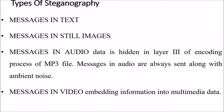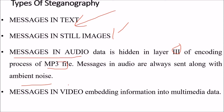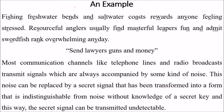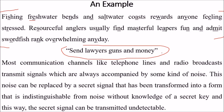There are various types of steganography: messages hidden in text, in still images, and in audio data — for example, hidden in layer 3 of the encoding process of an MP3 file. Messages in audio are always sent along ambient noise. There are also messages hidden in video by embedding information into multimedia data. One text example: by underlining certain words in a paragraph, you can extract a hidden message — such as 'send lawyers, guns, and money.'